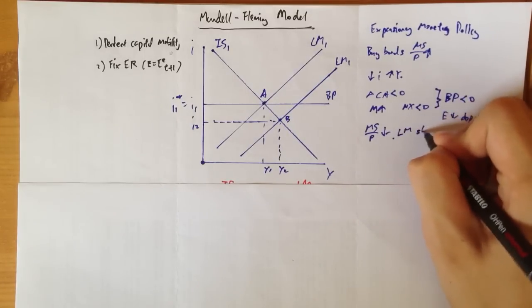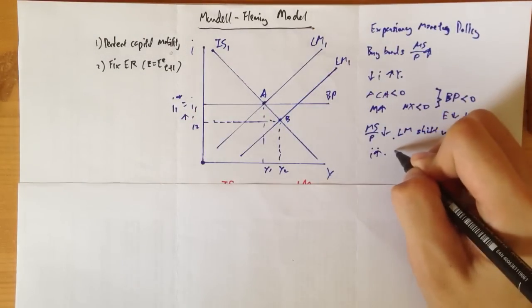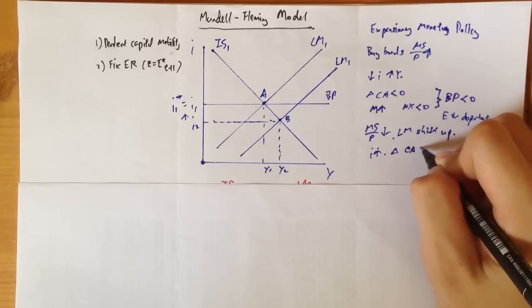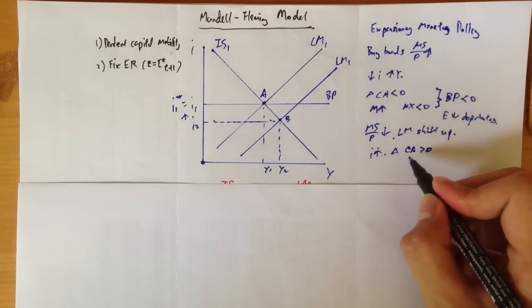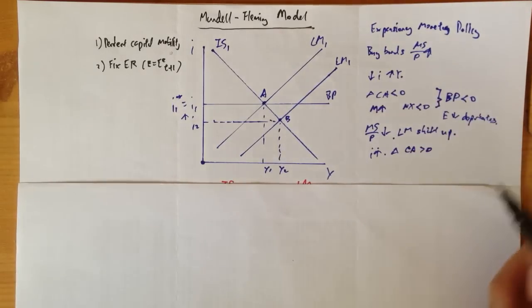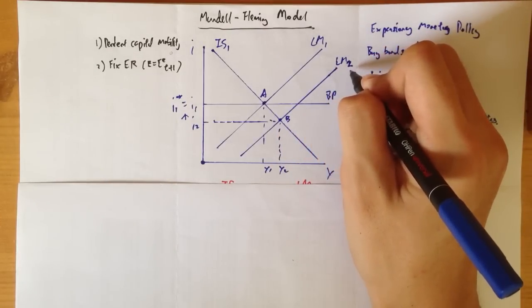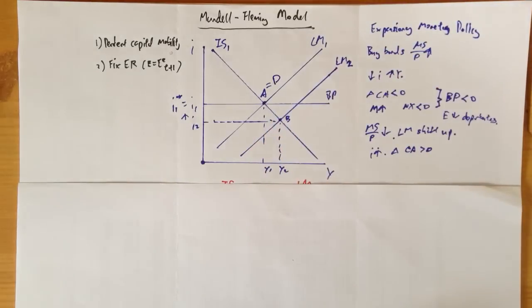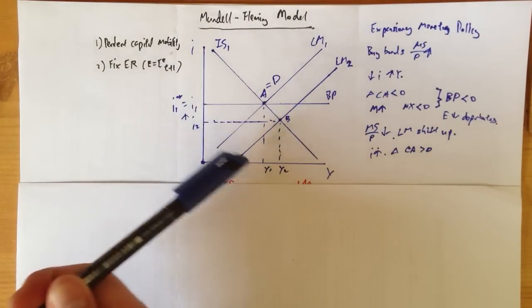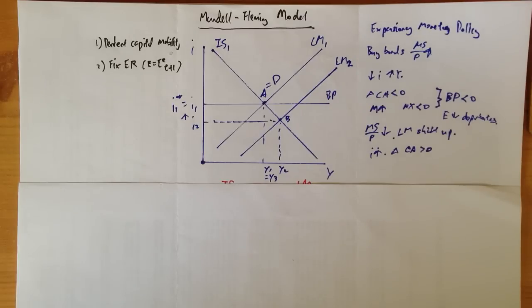The money supply will decrease and our LM will shift up. As the LM shifts up, the interest rate is going to increase, and this will send the capital account in an increasing amount — it was previously negative, and now the change in capital account is going to be more than zero. This adjustment will continue until LM2 shifts back to LM1, where your point A goes to point D, defining the equilibrium. The interest rate will go back to normal and Y1 goes to Y3. As you can see, the monetary policy is completely ineffective in increasing output because we have our output back at the original output level, Y1.